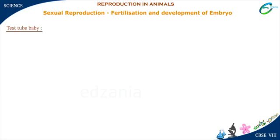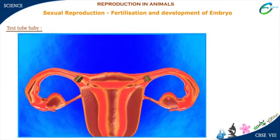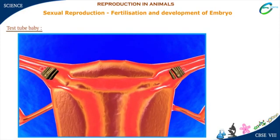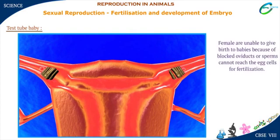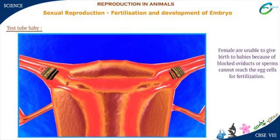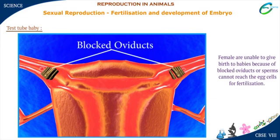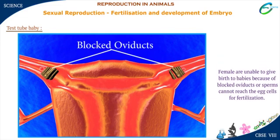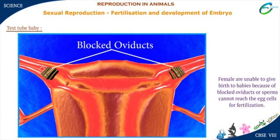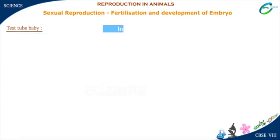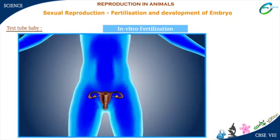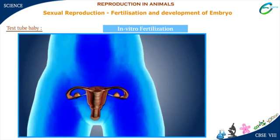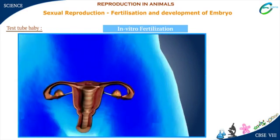Sometimes, some females are unable to give birth to babies. There can be several reasons for this, such as blocked oviducts, or sperms cannot reach the egg cells for fertilization. In such cases, doctors suggest in vitro fertilization.